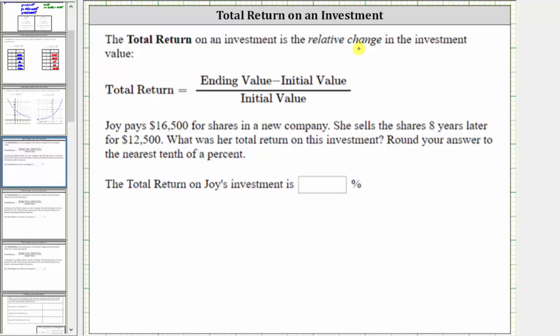In this video, we will look at two examples of determining the total return on an investment. The total return on an investment is the relative change in the investment value.